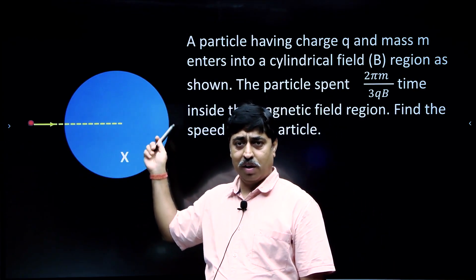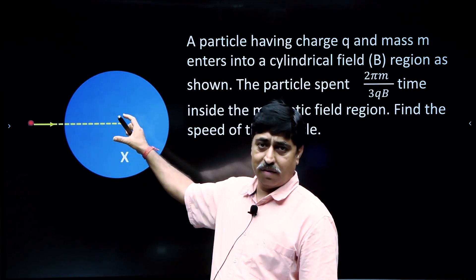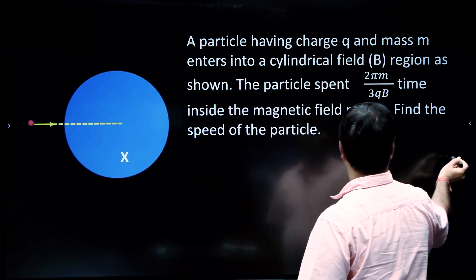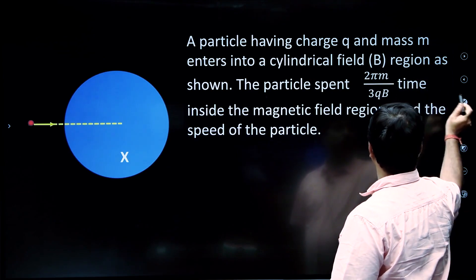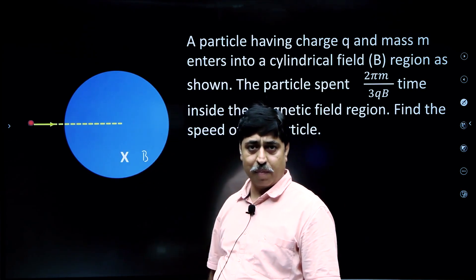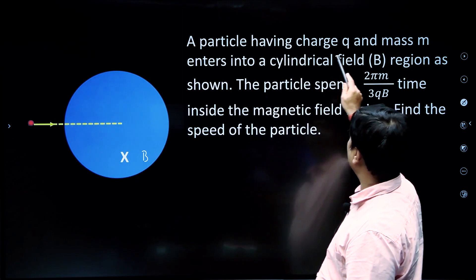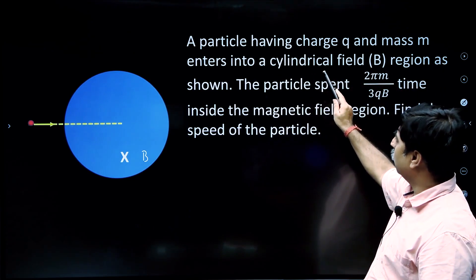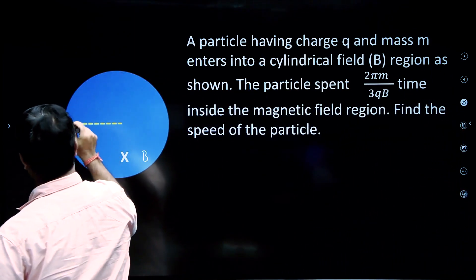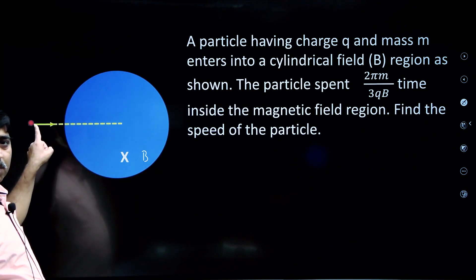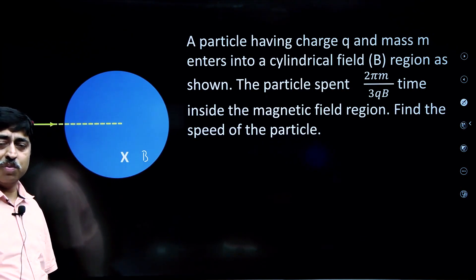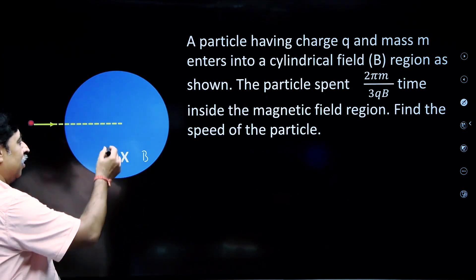This blue colored circular section that I've shown is the cross-section of a cylindrical region, in which there is a uniform magnetic field B. The magnetic field exists only inside this circular region — the magnetic field here is B, and it is directed into the plane of the board. A particle having charge q and mass m enters into this cylindrical field region as shown in the figure. The magnetic field is going into the plane of the board, and this particle is entering into the cylindrical region with its velocity directed toward the axis of the cylinder — that means toward the center of this blue circle.